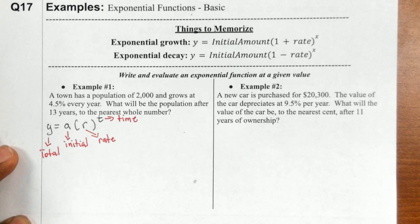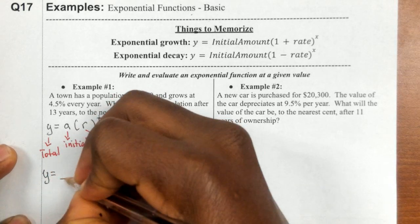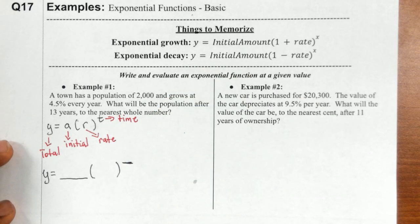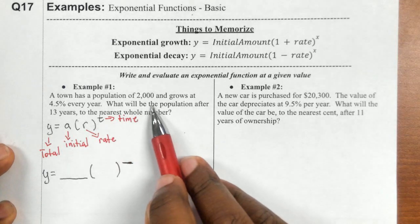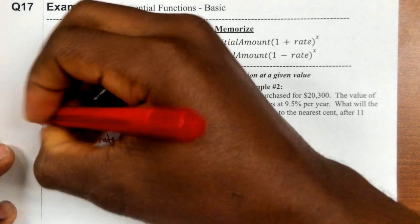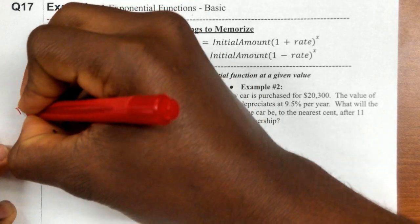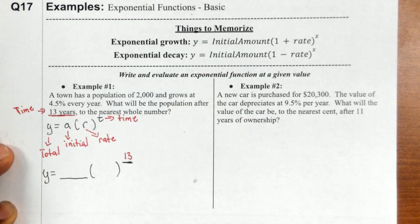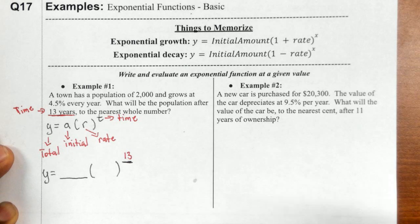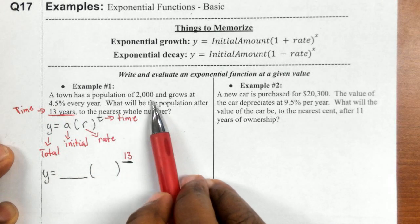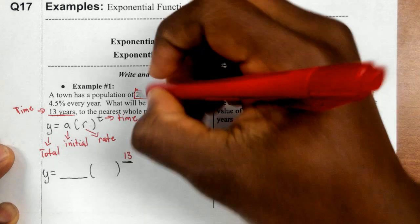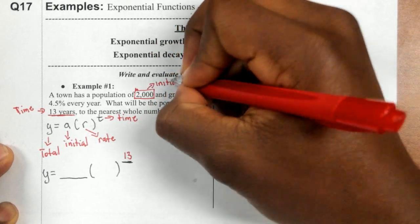When we read this question, we need to identify the initial value, the rate, and the time. The easiest thing to identify is your time — it says what will the population be after 13 years, so 13 years represents the time we're evaluating our function for. The next easiest is your initial — a town has a population of 2,000, and that 2,000 is the population before it started to grow, so it represents your initial or starting amount.